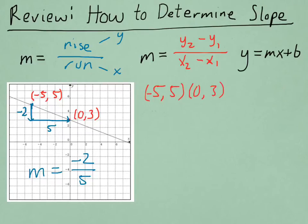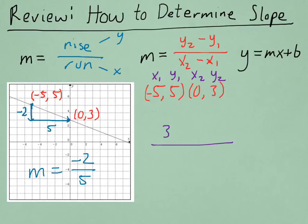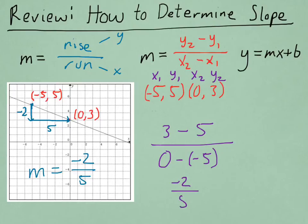Don't forget the tip about labeling your coordinates as x1, y1, x2, y2, and you just put them in the formula. In this case, we would have three minus five divided by zero minus a negative five. Keep in mind that subtracting a negative number actually means that you are adding. So three minus five is negative two, divided by zero plus five is five. We got the same answer as we had before.